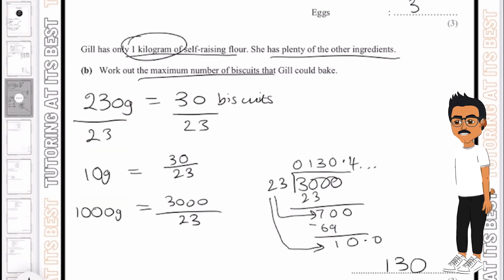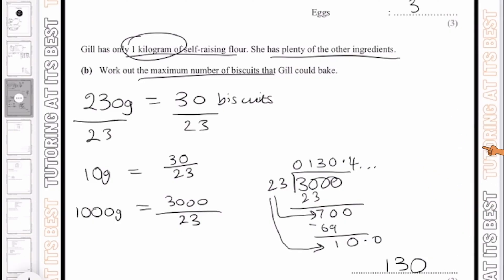So again, let's take a look at what I've done. I started off with 230 grams, which equals 30 biscuits. I've then divided them both by 23 to get the value of 10 grams. Now, once I've got that 10 grams, I could have easily timesed it by 10 to give me 100 grams, but I timesed it by 100 to give me 1000 grams, which is equivalent to 1 kg. I then started completing my bus stop method and then I got my answer. Brilliant.